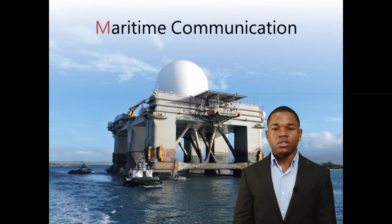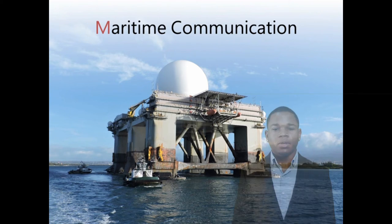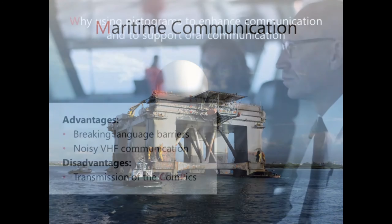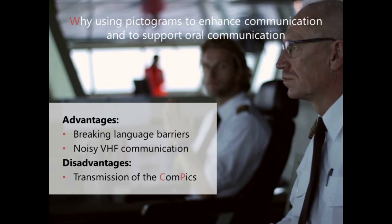To help reduce the risk of accidents, we have come up with the idea to transmit pictograms through the AIS system. Why use pictograms to enhance and support oral communication? The advantages of this system is that you will break any language barrier that exists in the communication. By transmitting these pictograms, you could always double check if the information received through the VHF radio is correct. You could also reduce the noisy VHF communication that mostly comes in channel areas or traffic separation scheme areas, and always check the intentions of a ship in your vicinity without having to communicate through the VHF radio.